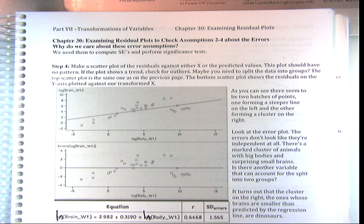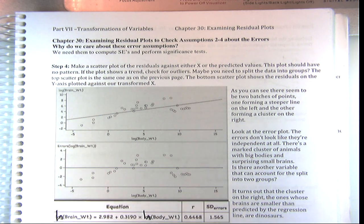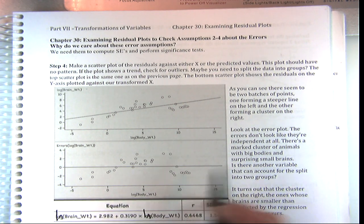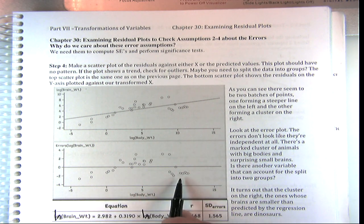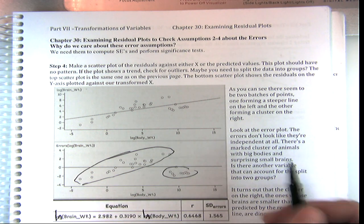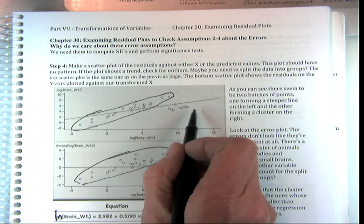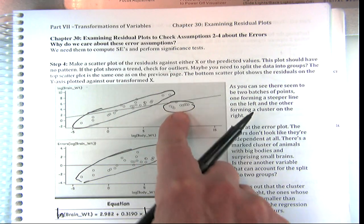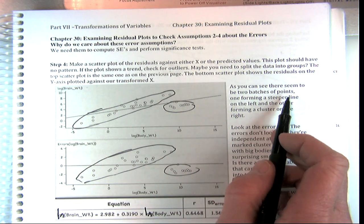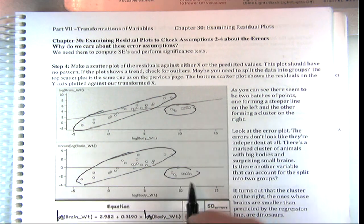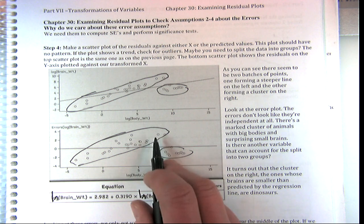Last time we interpreted the coefficients for the slope and the intercept. But now we look at this and say we can do better. Can you see this is a violation of our assumptions? Especially when you look at the error plot, you can see we really have two distinct groups — this group and this group. There seem to be two batches of points: one forming a steep line on the left and the other forming a cluster. You can really see it in the error plot.